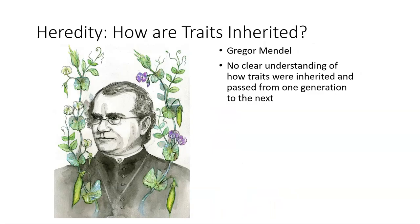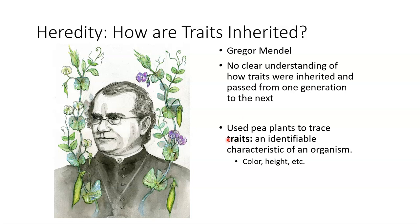Heredity is essentially the study of how we inherit our genes. This field was started by Dr. Gregor Mendel, who was a botanist — meaning he worked with plants. At the time, there wasn't a clear understanding of how certain plants got different features from one seed to the next. He used pea plants to trace what we call a trait — an identifiable characteristic found in an organism. In plants, a trait could be flower color, plant height, or seed texture — all things he connected to plants and related to humans and other organisms.